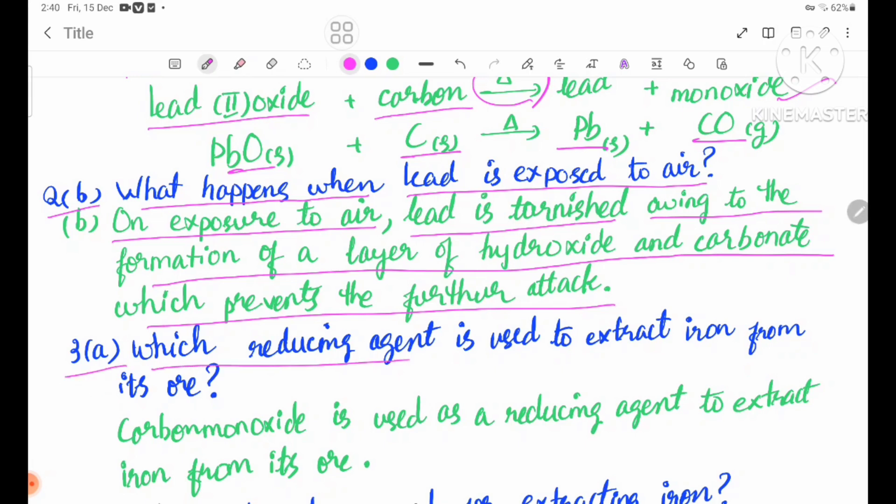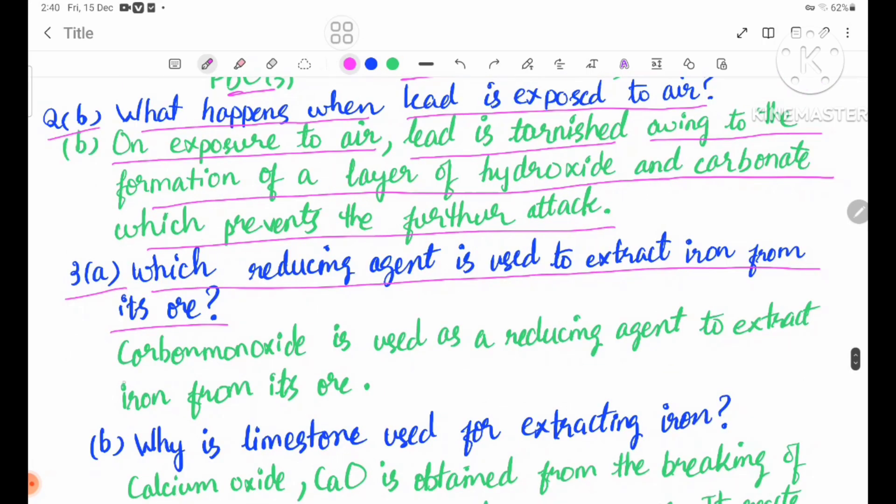Question 3A: Which reducing agent is used to extract iron from its ore? Carbon monoxide is used as a reducing agent to extract iron from its ore. Carbon monoxide gas can reduce the iron oxide.